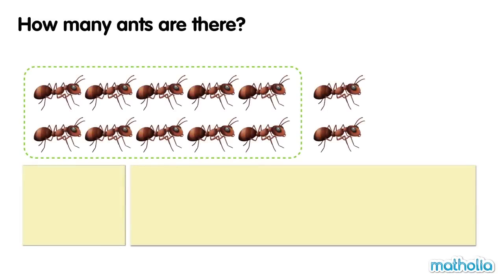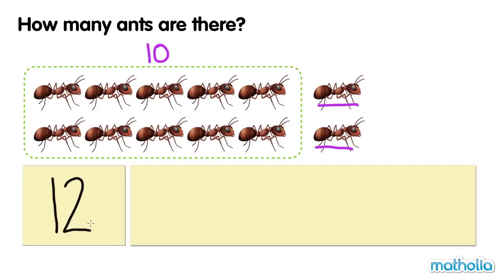How many ants are there? Ten, eleven, twelve. There are twelve ants. Twelve.